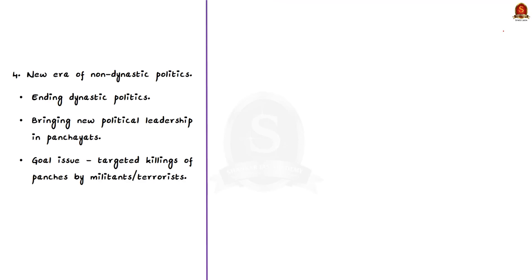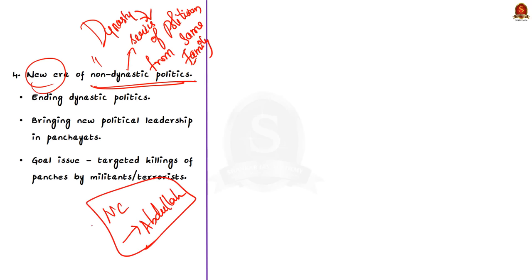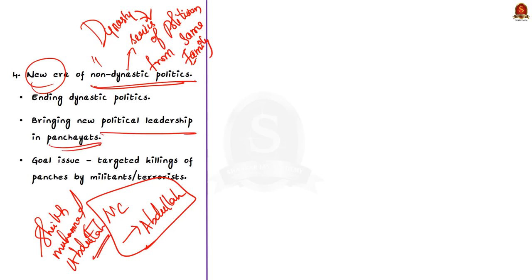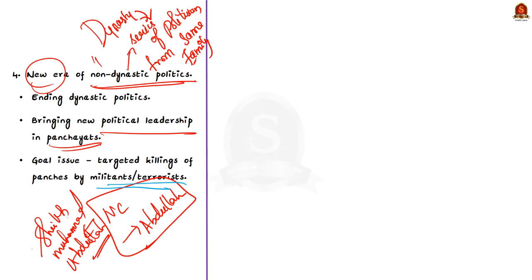The fourth goal was to bring a new era of non-dynastic politics. Dynastic politics means a series of politicians and rulers coming from the same family — for instance, the Abdullahs have remained in Jammu and Kashmir politics for over 80 years through the party called National Conference, founded by Sheikh Mohammed Abdullah. One of the center's goals was to end this dynastic politics and enable non-dynastic politics through bringing new political leadership at panchayat ranks. But this goal is also failing because the panches — leaders of panchayats — are being targeted by militants, so this goal is not fulfilled either.